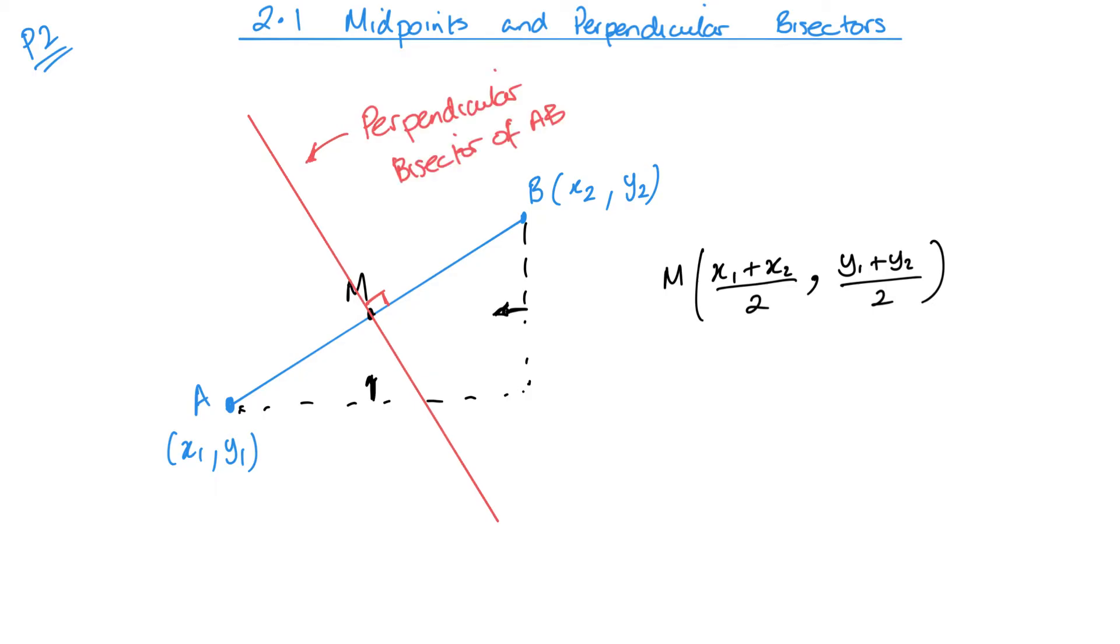Now, you learned about perpendicular lines back in P1. It was in the straight line graphs unit, which is unit five. And if you remember there, when you found the gradient, the gradient of a line would be the difference in y values divided by the difference in x values. And then the gradient of the perpendicular line would be one over that gradient and change your sign.